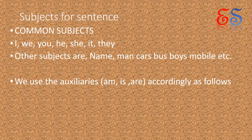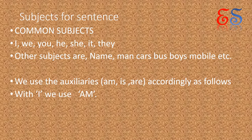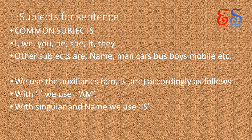We use the auxiliary am, is, are accordingly as follows. Present tense में हम am, is, are auxiliary का use करते हैं। With I, we use am — I के साथ हम am का प्रयोग करते हैं। With singular and name, we use is — एक वचन और नाम के साथ is का प्रयोग किया जाता है। With plurals, we use are — अनेक वचन के साथ are का प्रयोग किया जाता है।